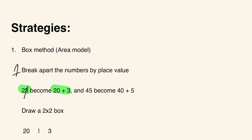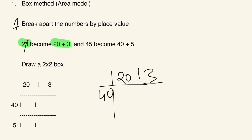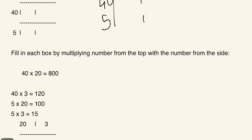Next, draw a 2-by-2 box. You put 20 and 3 along the top, and 40 and 5 along the side. This separates your numbers so you can multiply each part individually. Then you fill in each box by multiplying the number from the top with the number from the side.